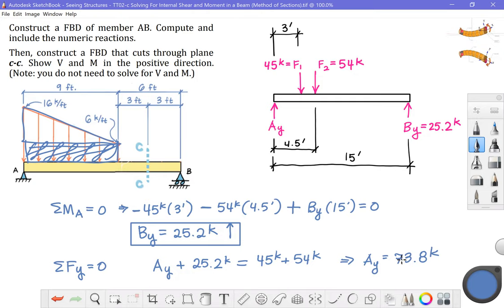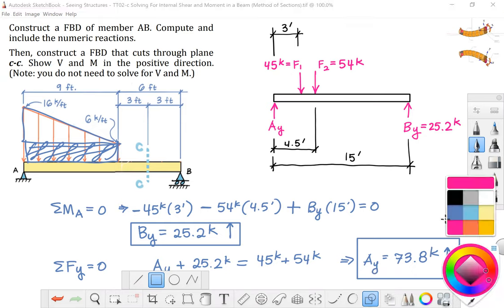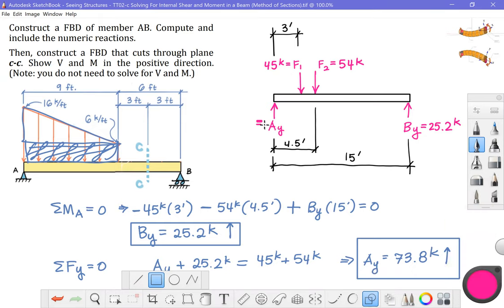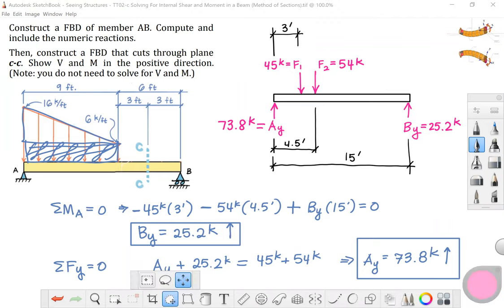As before, we got a positive value. That confirms our assumption that that reaction force on the body points upwards. I'll go ahead and add that value up above 73.8 kips. And now I can mask out everything down here at the bottom.